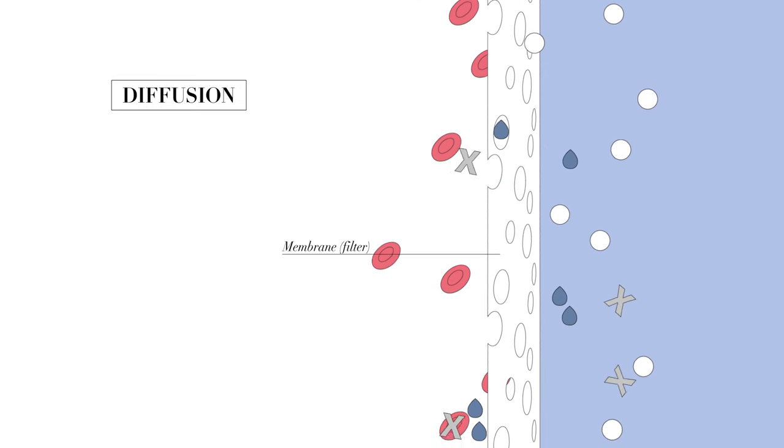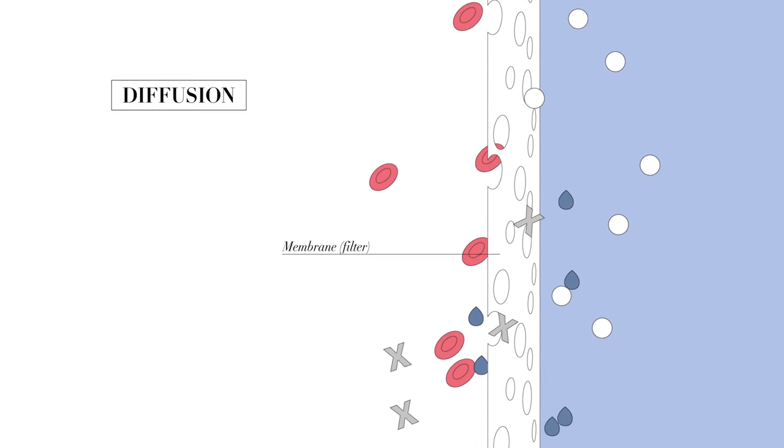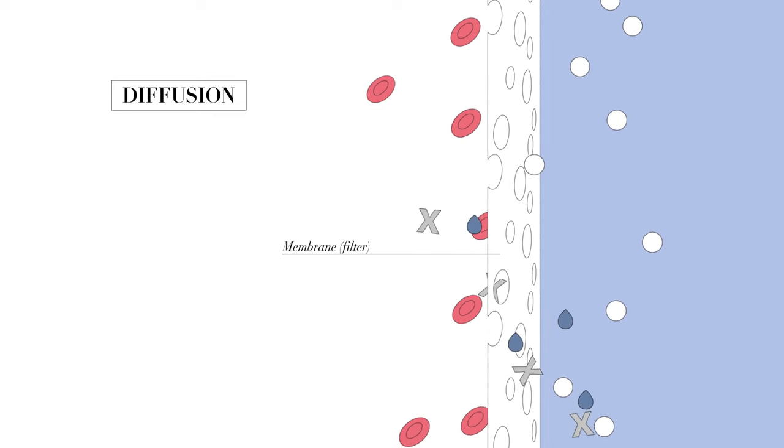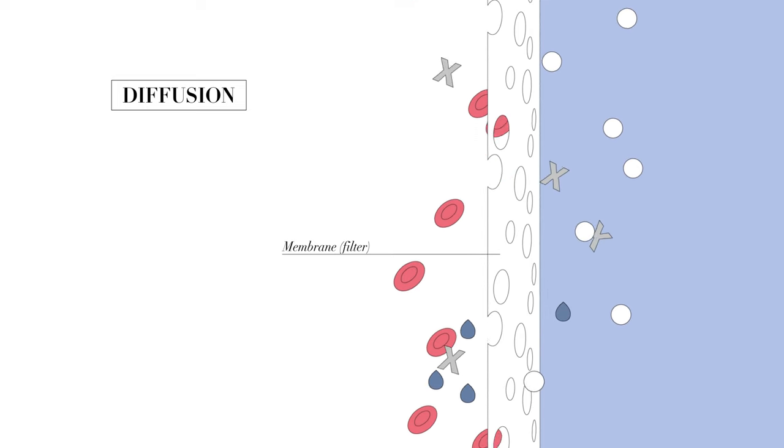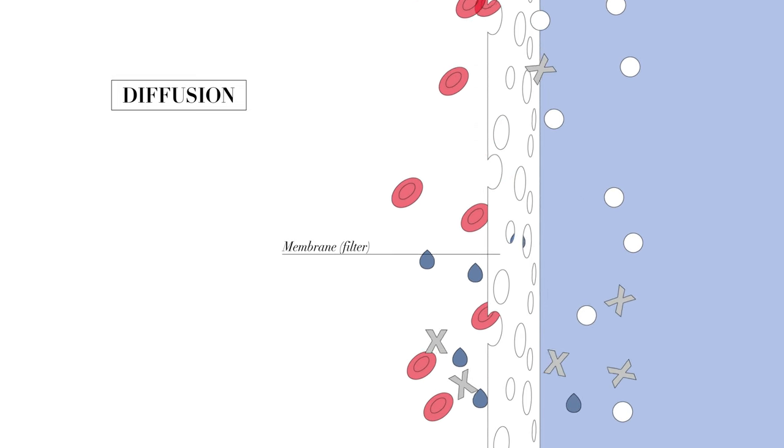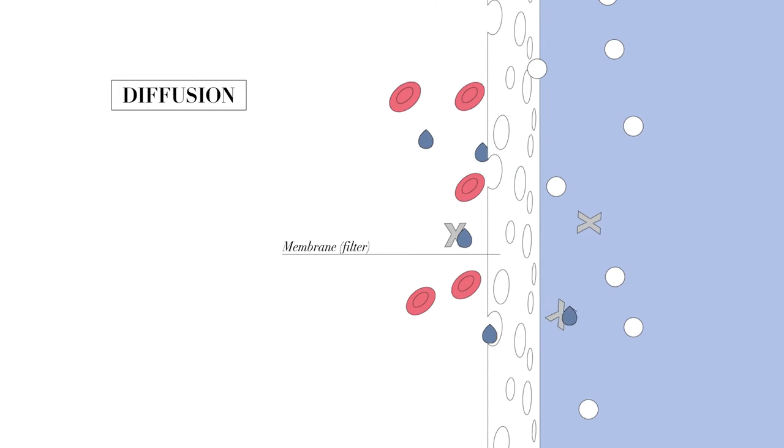Metabolic toxins, urea, and other small particles pass through the membrane of the hollow fibers and are thus filtered out of the blood. By contrast, vital substances and blood cells are held back due to the small size of the pores.